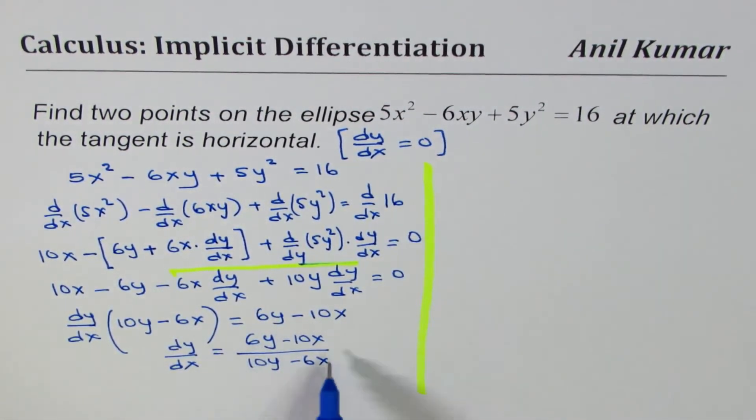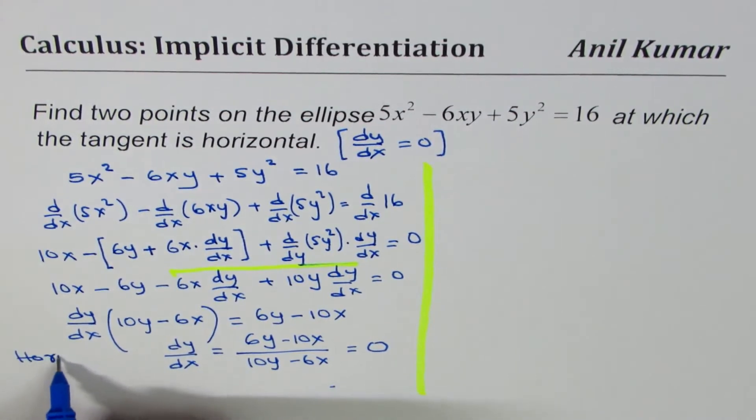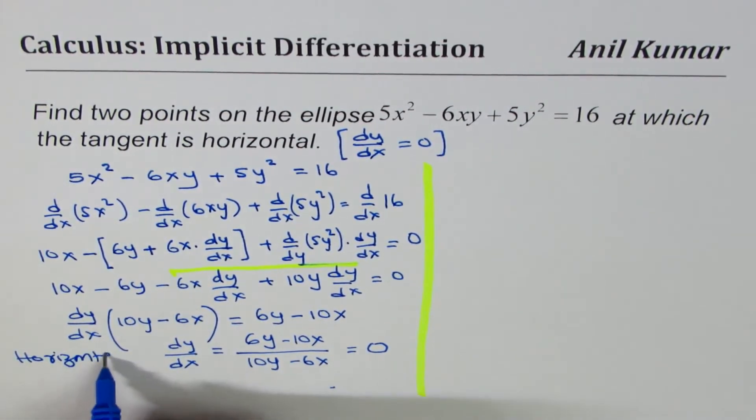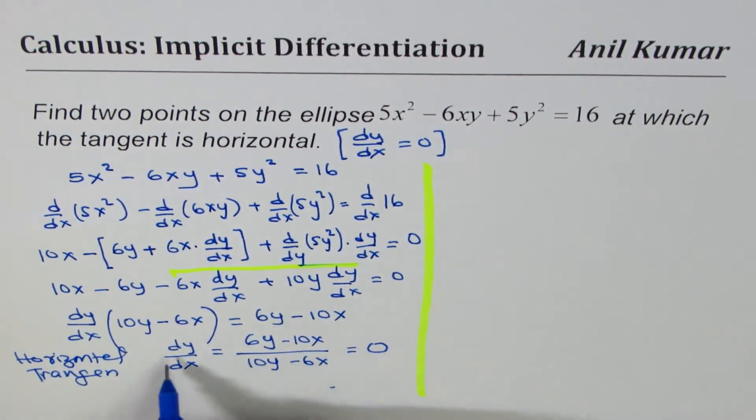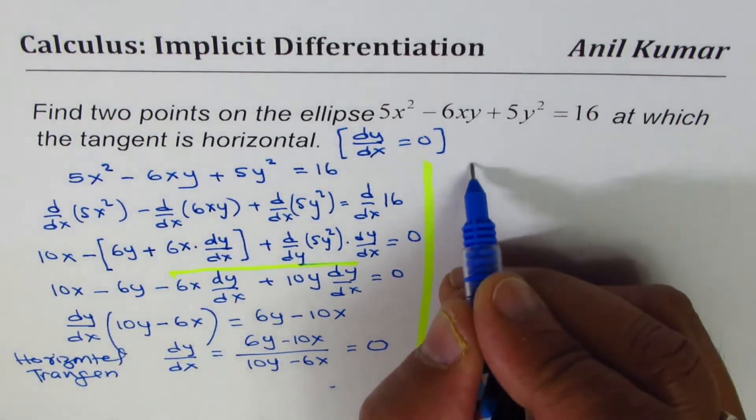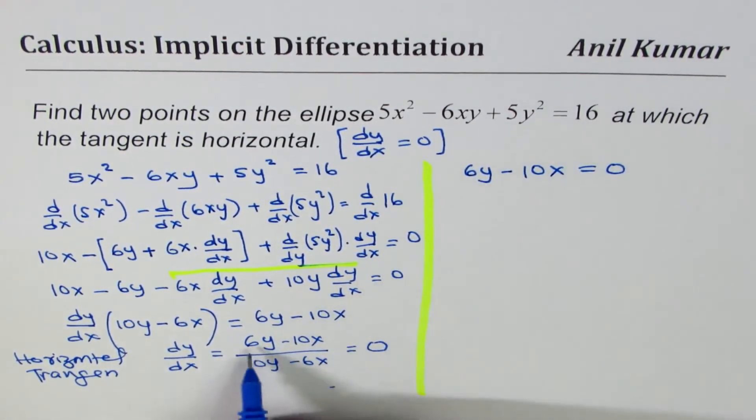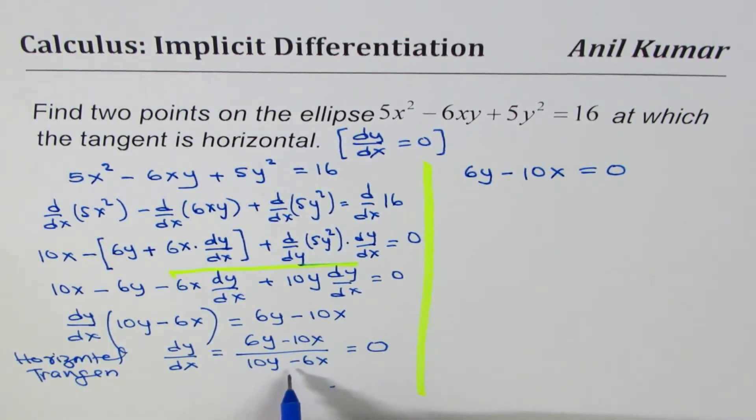So we will equate this term to 0. We are equating dy/dx to 0, so that basically implies that 6y - 10x equals to 0. So if the numerator is 0, denominator should not be 0, then the derivative will be 0.